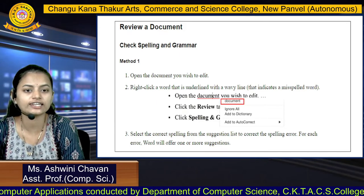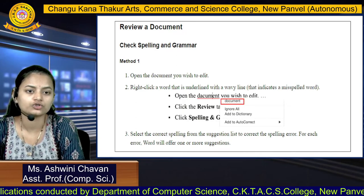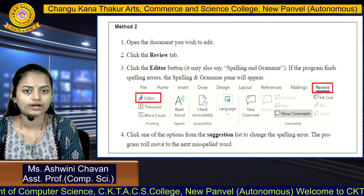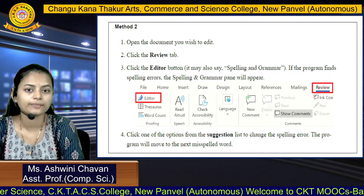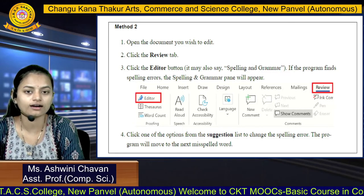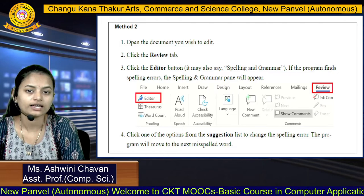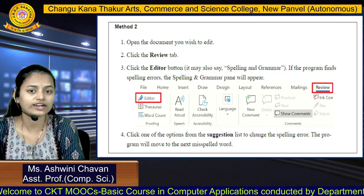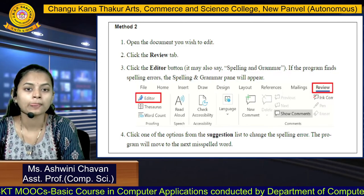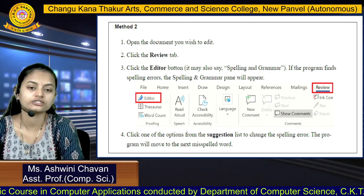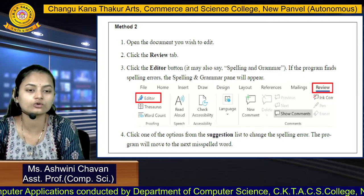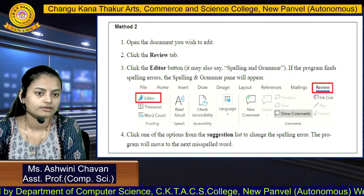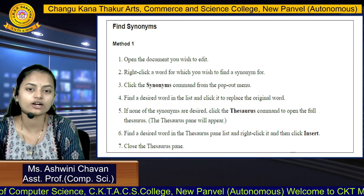Method 2: after opening the document, go to the Review tab and click the Editor button on the left side of the screen. If the program finds spelling errors, the Spelling and Grammar pane will appear. Click on the option from the suggestion list to correct the spelling error — it will give you the correct word for that content.